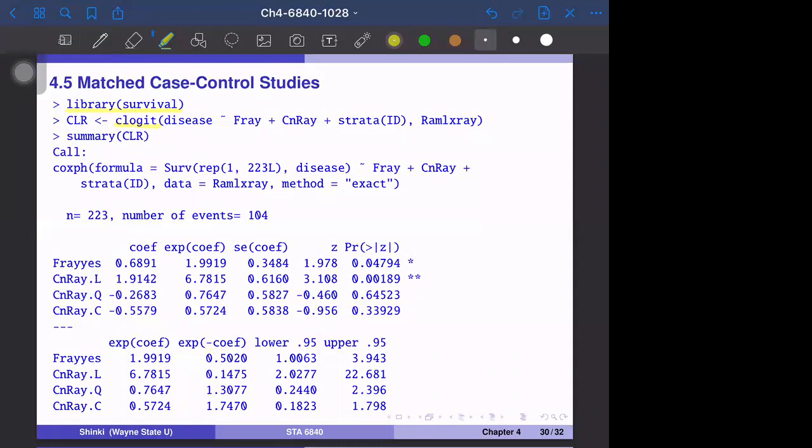We fit the disease on all other variables. In the textbook example, it uses all variables, but since there are many variables, I only use F-ray, one type of X-ray, and CN-ray, another type of X-ray. The other variables are all insignificant. We have to fit the full model first and drop those variables by trial and error.